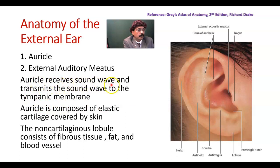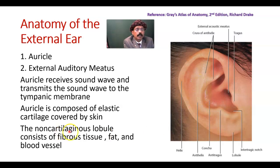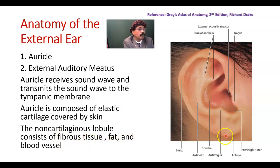The auricle receives sound waves and transmits them to the tympanic membrane. The auricle is composed of elastic cartilage covered by skin. The non-cartilaginous lobule consists of fibrous tissue, fat, and blood vessels. This is the lobule.